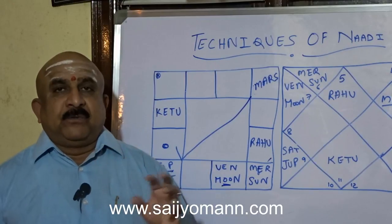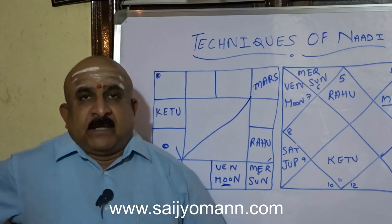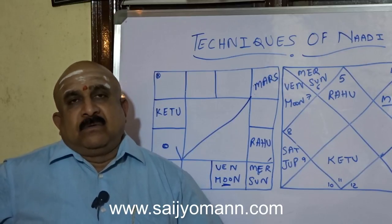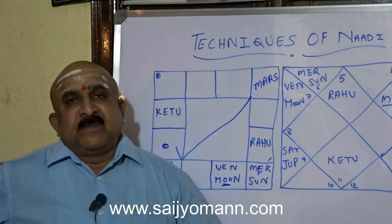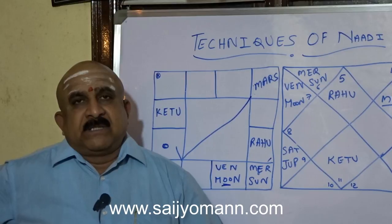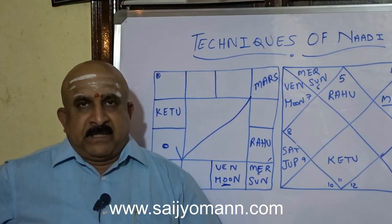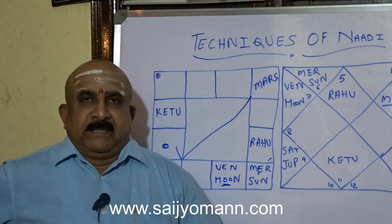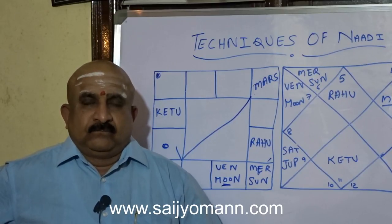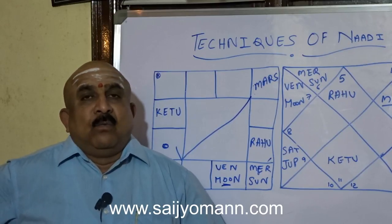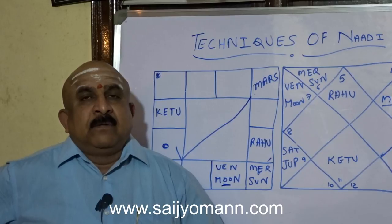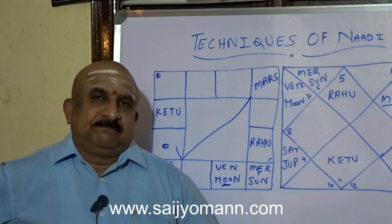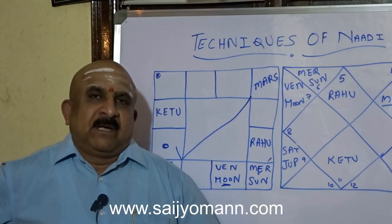Rahu will definitely give trouble in monetary affairs. Even for Kutumbastanam — that is the second house from Jupiter — Rahu will create trouble in the family and marital life. If Ketu is in the second house from Jupiter, these people may get into unnecessary arguments between the better halves, and the marital life may bring them trouble.